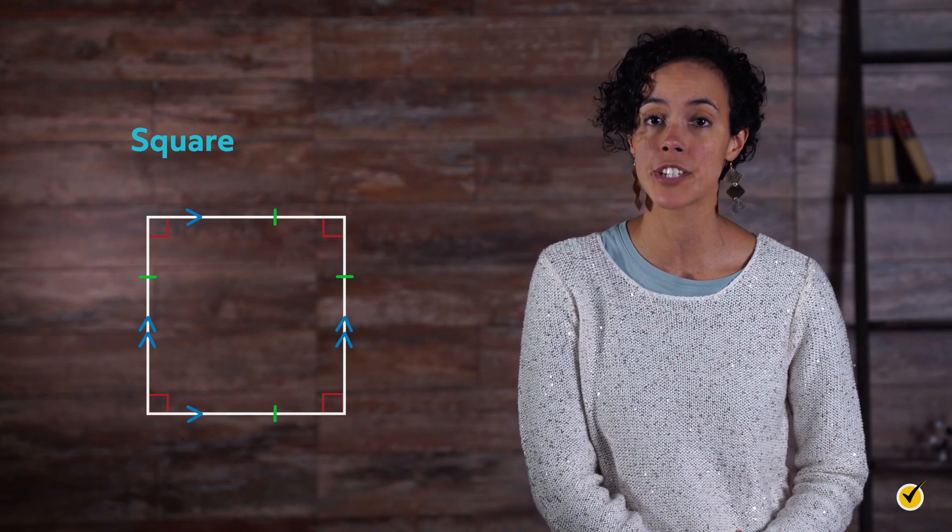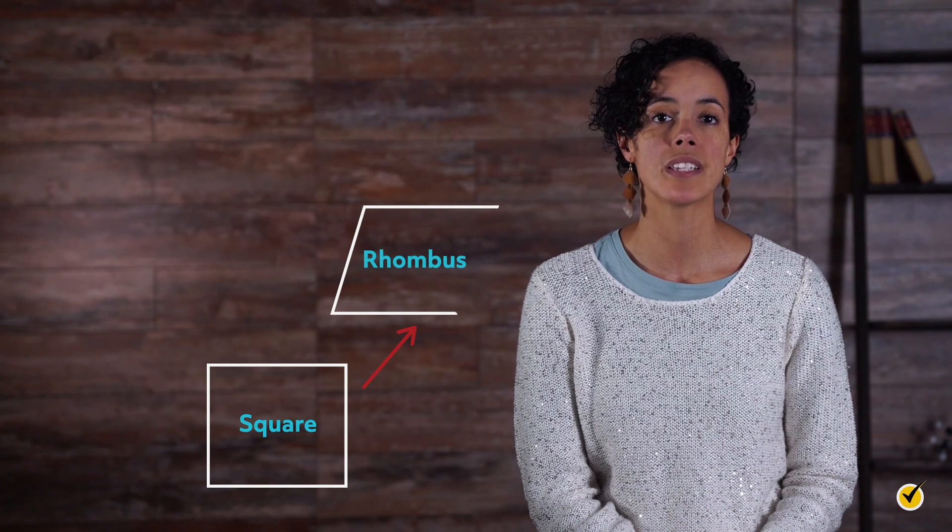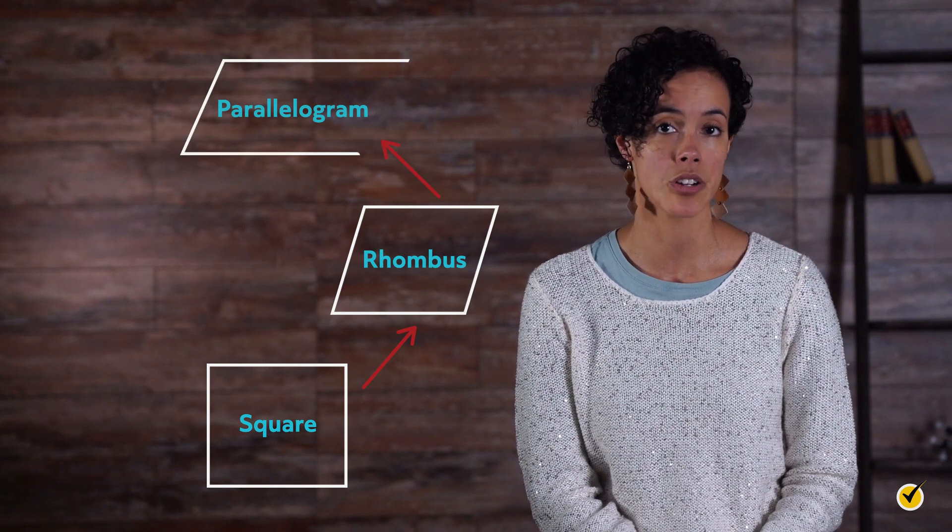So let's recap quadrilaterals before we start exploring their diagonals. Here we've arranged our quadrilaterals into a sort of tree, starting with the square as the trunk. Every square is a rhombus and every rhombus is a parallelogram.